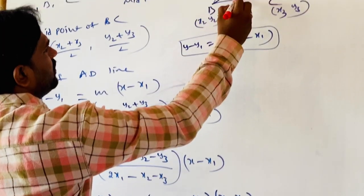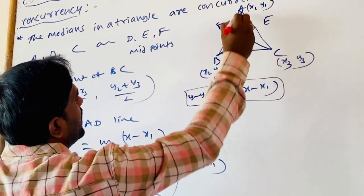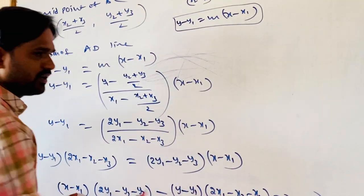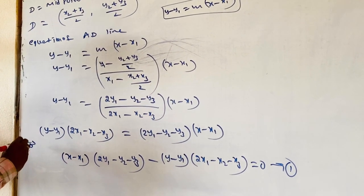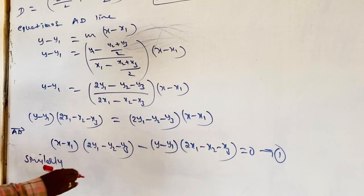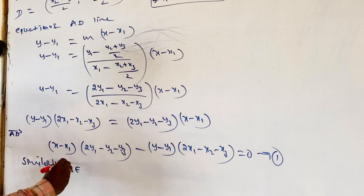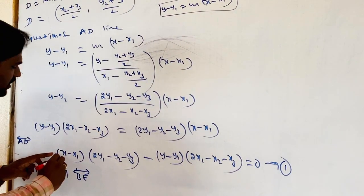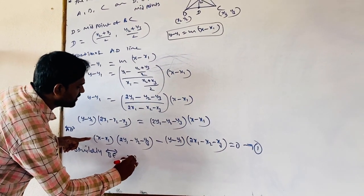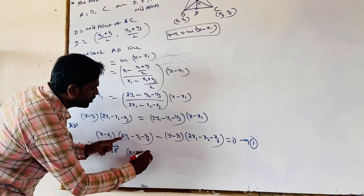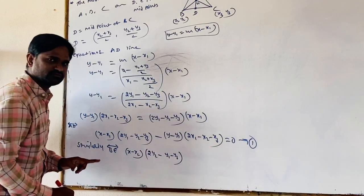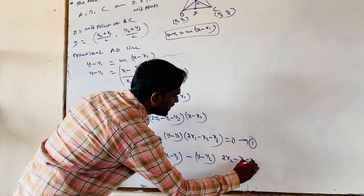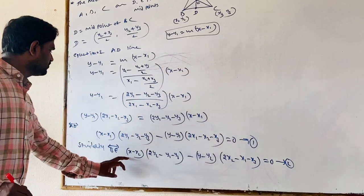Similarly, we find the equation of BE. B = (X2, Y2). Using the same approach, the equation of BE is: (X − X2)(2Y2 − Y1 − Y3) − (Y − Y2)(2X2 − X1 − X3) = 0. This is Equation 2, which gives us the BE line.